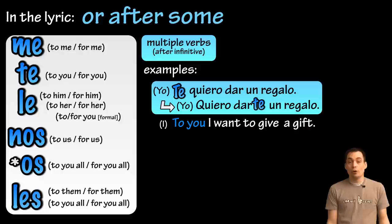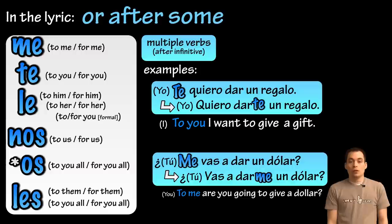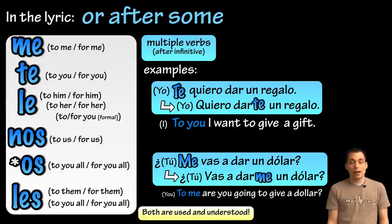'¿Me vas a dar un dólar?' — literally 'to me you are going to give a dollar.' And I can change this to '¿Vas a darme un dólar?' Either are fine, either are understandable and used.